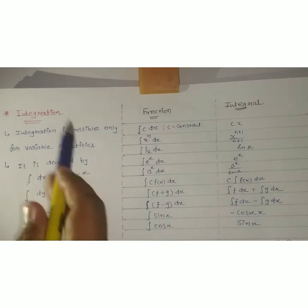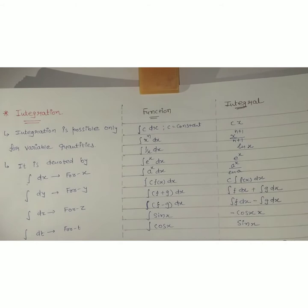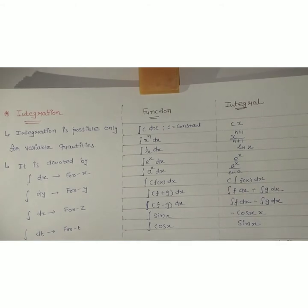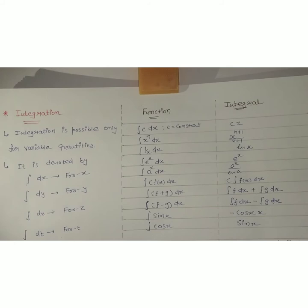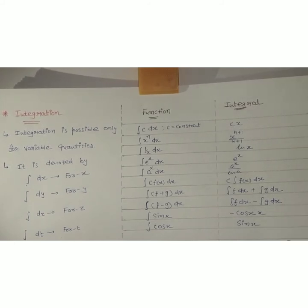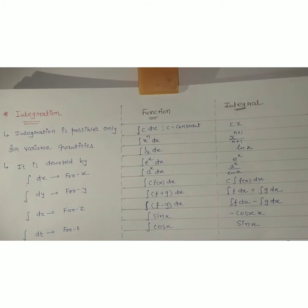The other topic is integration. So what is integration? Integration means collecting small small things together to make one big thing. For example, if we collect small small pastries together and arrange them in a circular shape, it can look like a cake. So collecting small things to make a big thing — that is called integration.